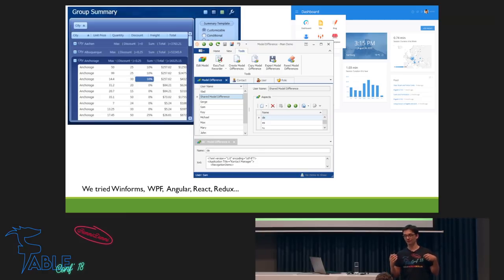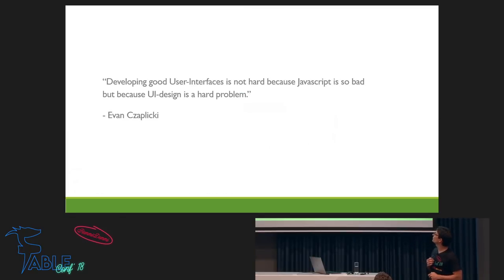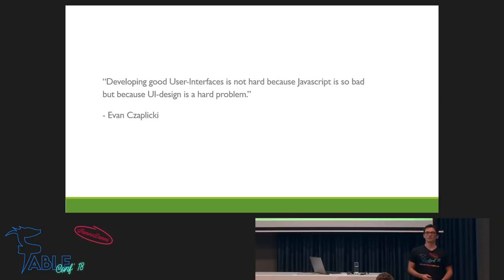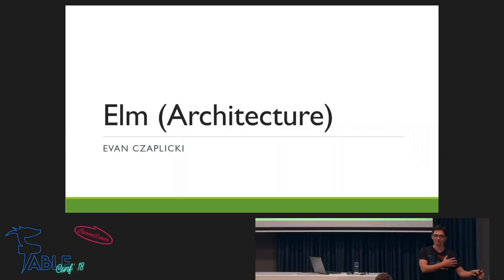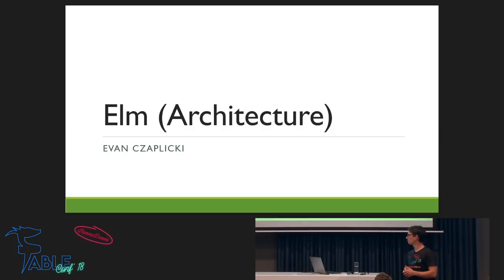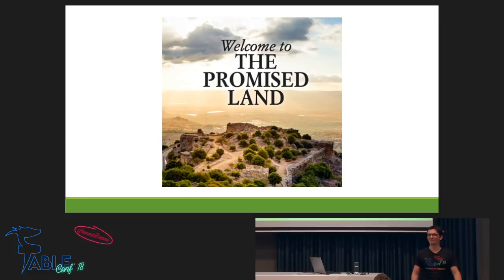Then came a guy I really admire — Evan Czaplicki, the inventor of Elm. He said that developing good user interfaces is hard not because JavaScript is so bad, but because UI design is a hard problem. He had a solution in mind: the Elm architecture. Elm is a statically typed functional ML language — a really nice thing. This was also my introduction to functional programming. When I first saw it, for me it was like: welcome to the promised land.